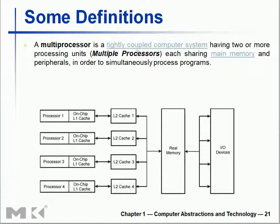A multiprocessor is a tightly coupled computer system having two or more processors. You need to remember this figure — it can appear in your exam. You have processor one, processor two, processor three, processor four — all of them have their own on-chip cache. Then there is a separate L2 cache for each of them, real memory, and input/output devices for the operating system. Please remember this figure; it is important.